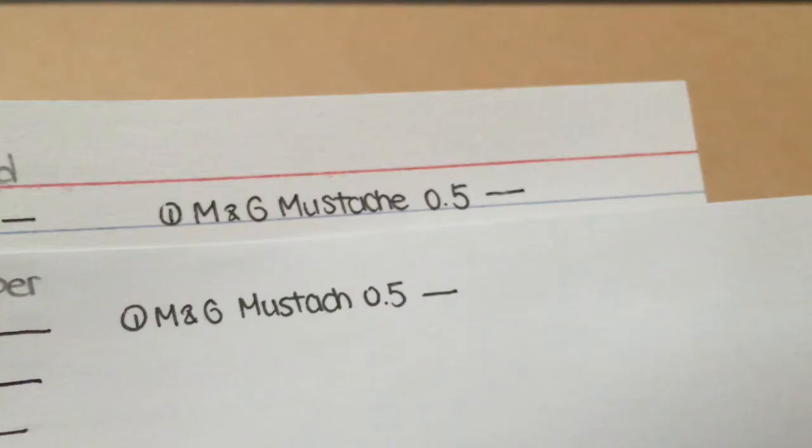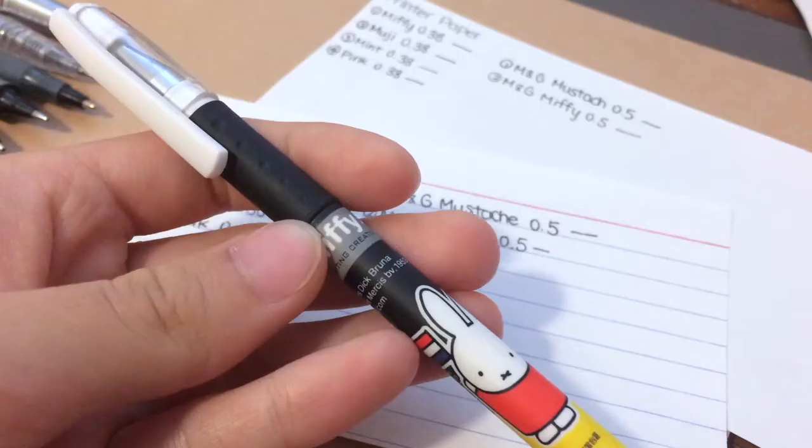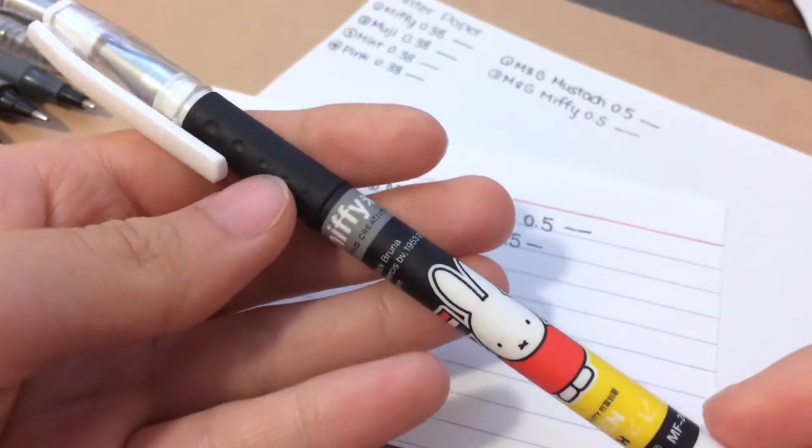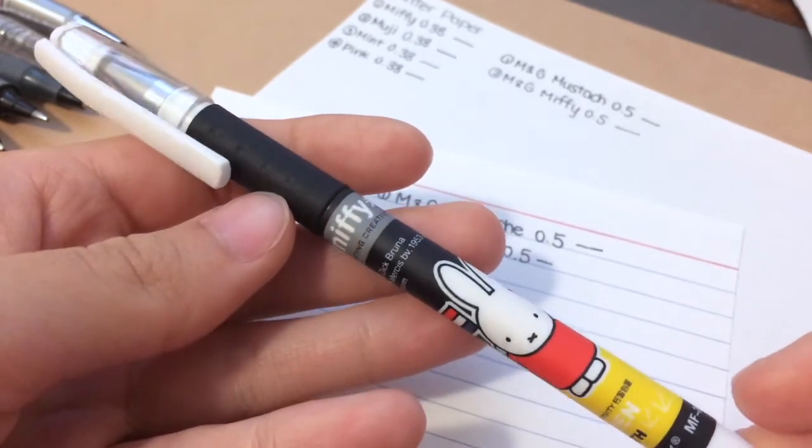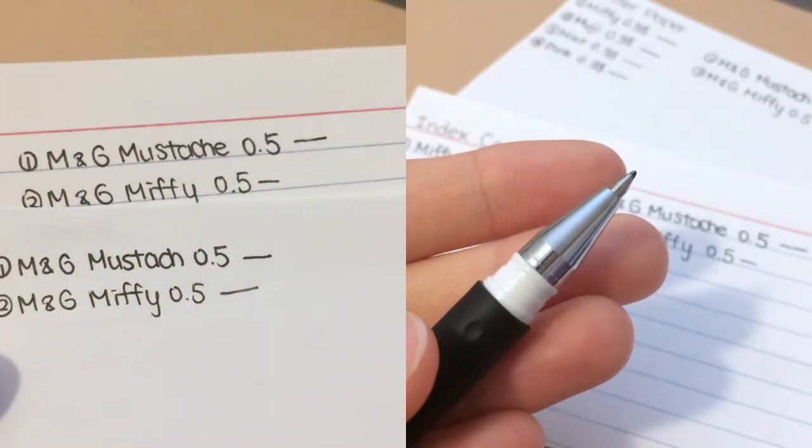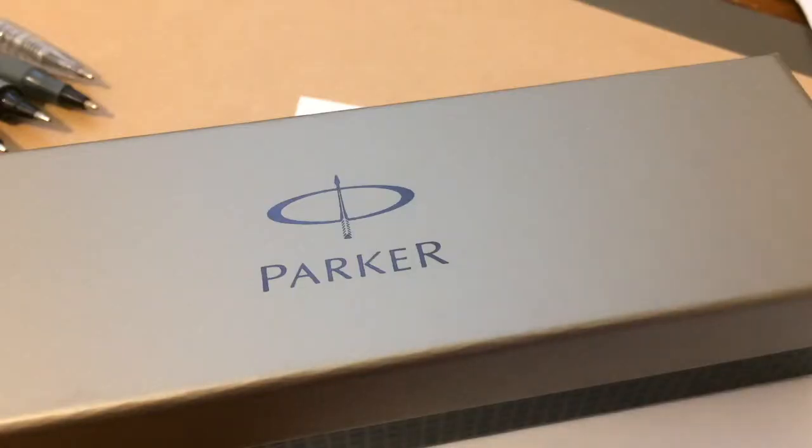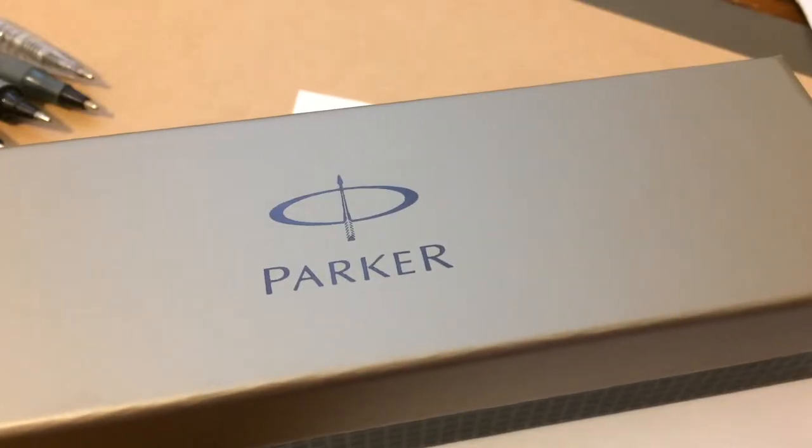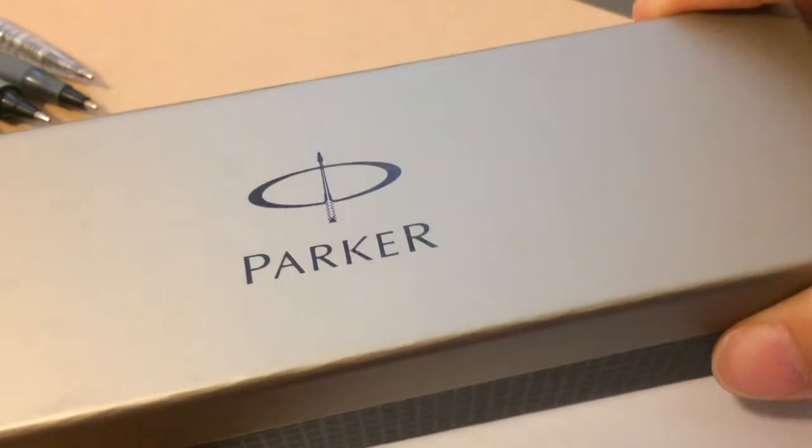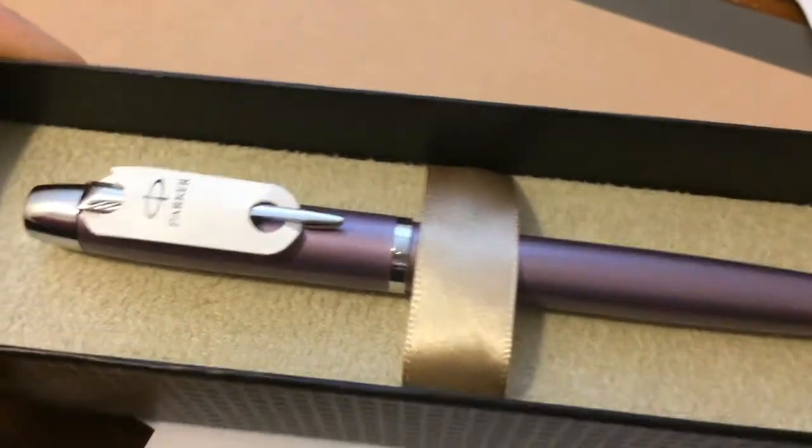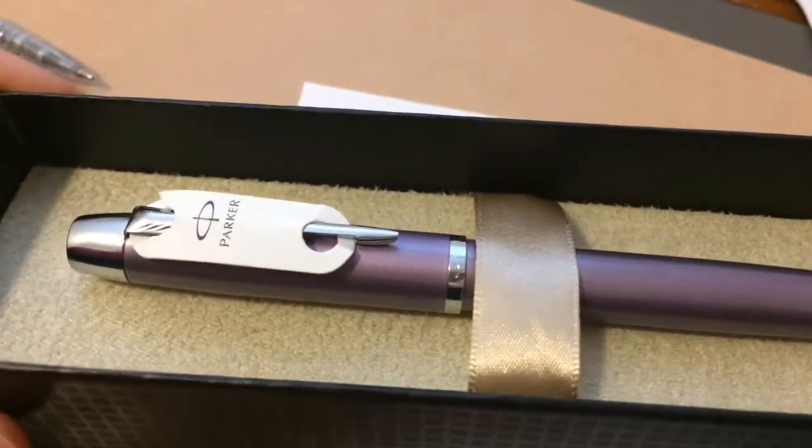So this is a bit thicker than the 0.38 pens. We also have this Miffy collection 0.5mm pen but surprisingly it's thinner than the mustache one. Then we have this Parker 0.5 pen and I got this as a gift. It's really fancy, it's in a box.